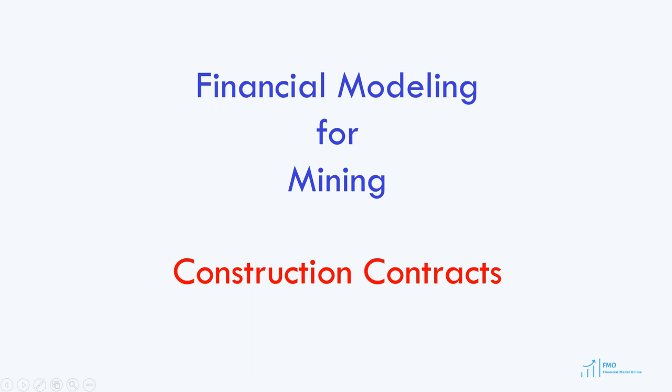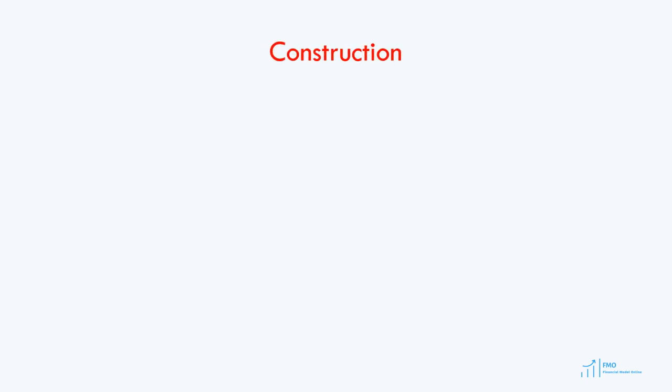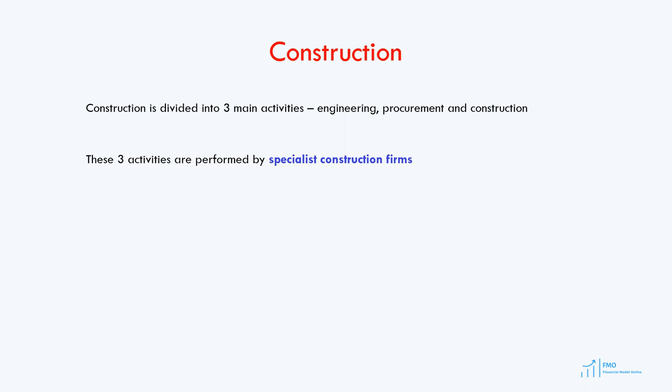In this lesson, we'll go over the main construction contracts in the mining industry. Construction is usually divided into three main activities: engineering, procurement, and construction. These three main construction activities are performed by specialist construction firms.